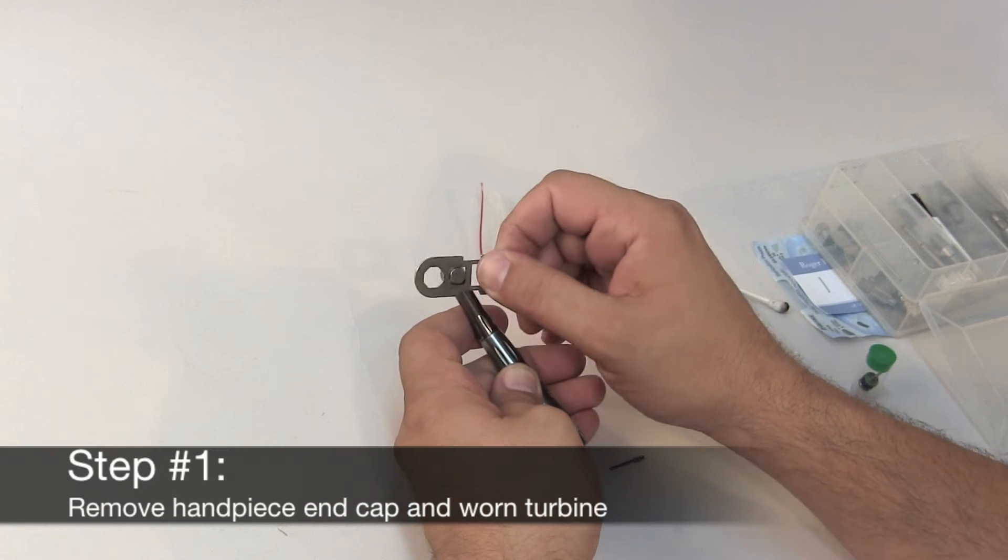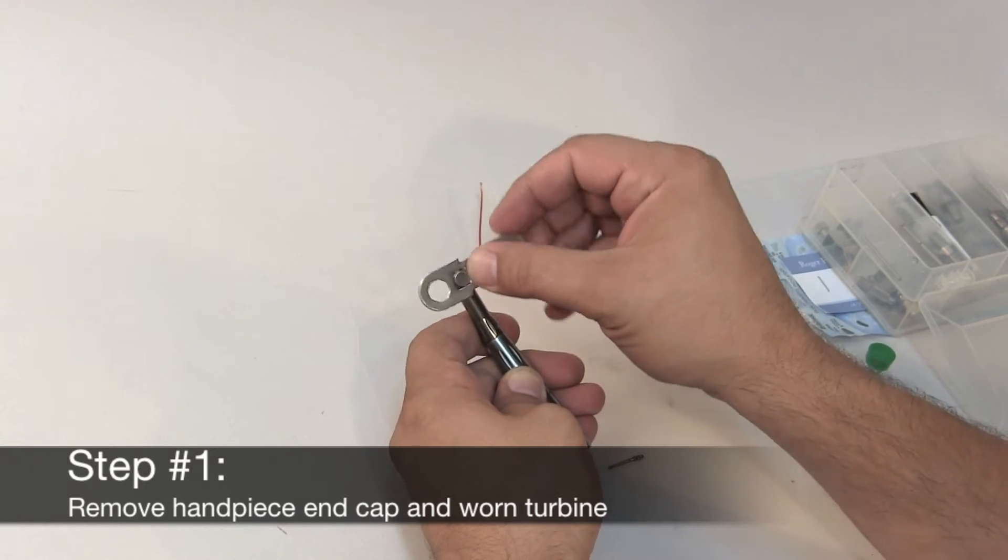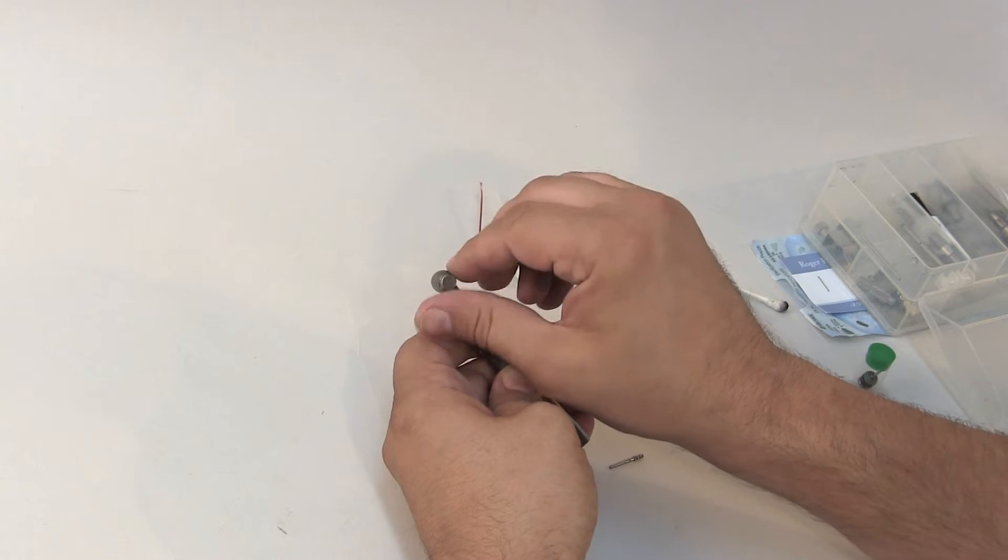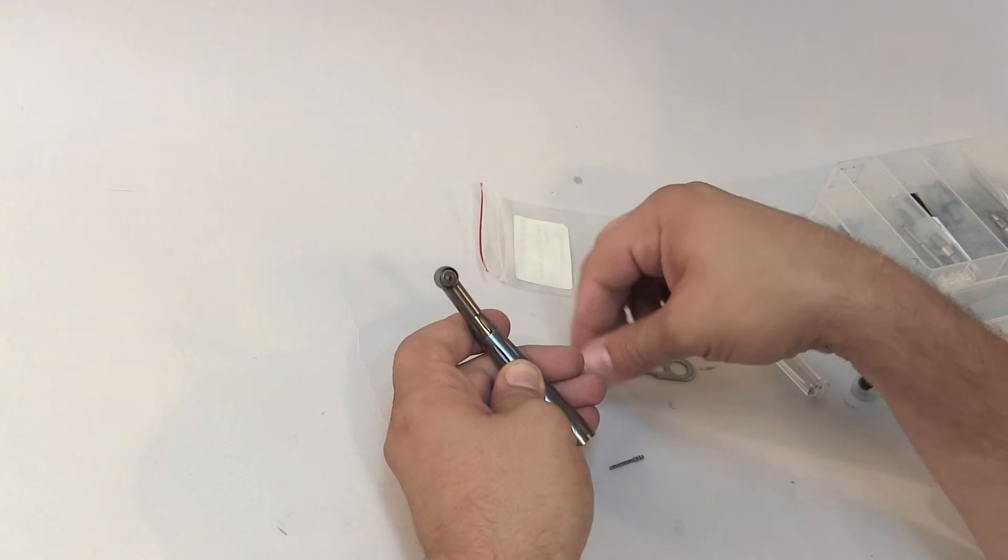Using the specialized wrench provided with your handpiece, unscrew the end cap from the handpiece head and remove the worn turbine by pushing out from the front. Don't use pliers or other inappropriate tools, it will damage your handpiece.